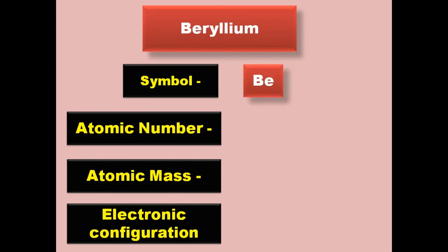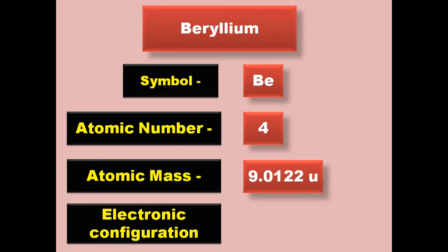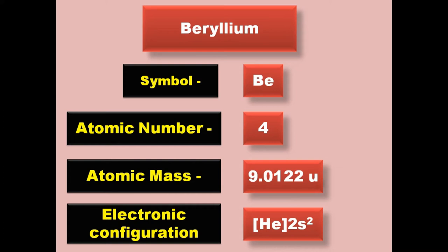Beryllium has symbol Be, atomic number 4, atomic mass 9.0122, electronic configuration [He] 2s2. Beryllium is an alkaline metal and exists in solid form at room temperature.